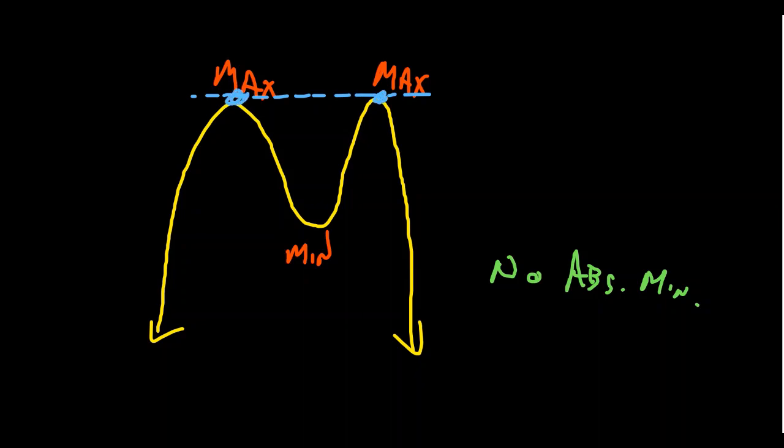Now this doesn't mean that there are two absolute maximum values. There's only one absolute maximum value, because the value is the y-coordinate. There's only one y-value. Let's say that both of these are y = 7. If there's ever a tie, that doesn't mean there are multiple maximum values, at least not absolute maximum values.